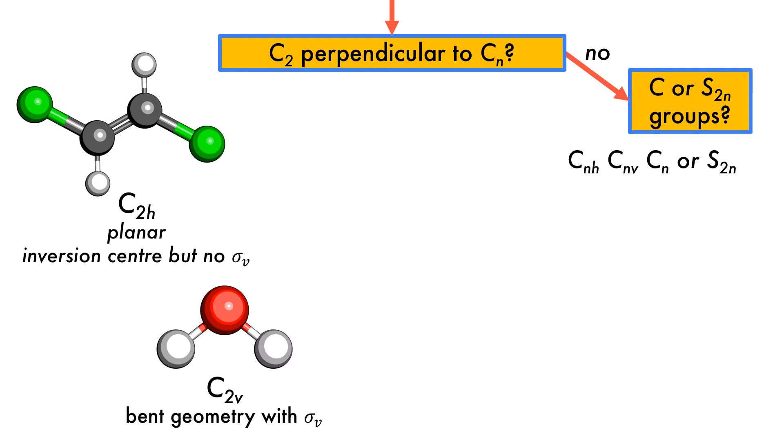CNV is similar to DND, but does not have a mirror plane, not in the plane of the principal axis. It is represented by water, which has the C2V point group.